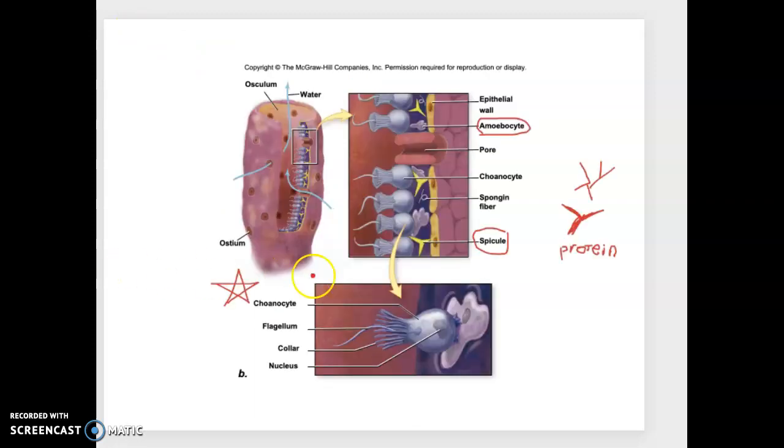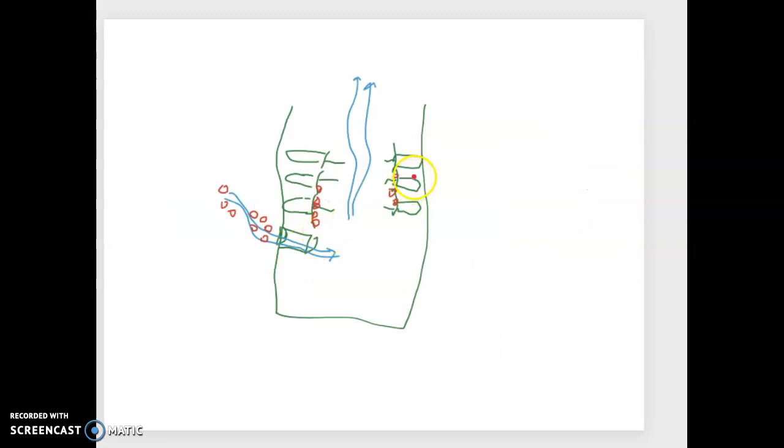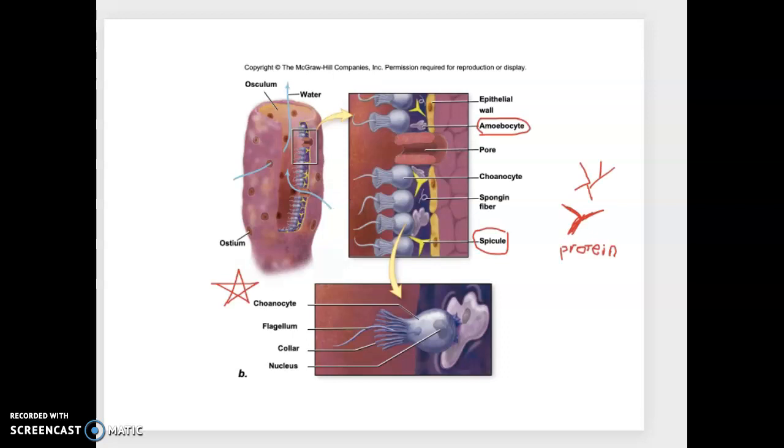And, remember back here, the amoebocyte. Well, what's going to happen next is the amoebocyte is going to ooze over here, grab a hold of that little piece of food, and carry it around the body of the sponge. Digest it, break it down, allow the nutrients to diffuse to other cells within the sponge's body.